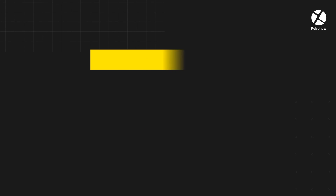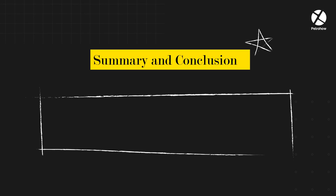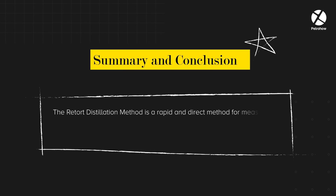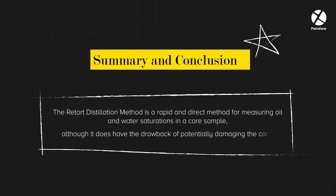In summary, the Retort Distillation Method is a rapid and direct method for measuring oil and water saturations in a core sample, although it does have the drawback of potentially damaging the core.